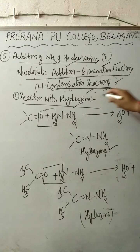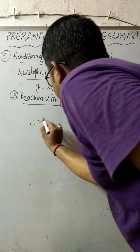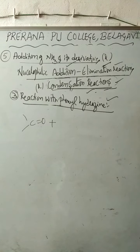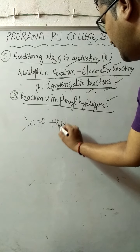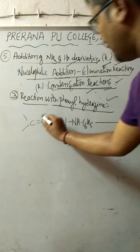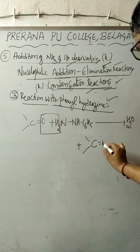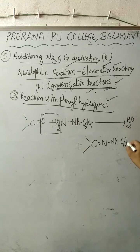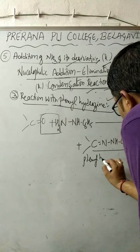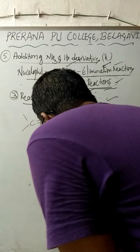Next, let us discuss the reaction with phenylhydrazine. Either an aldehyde or a ketone can be used. Phenylhydrazine is represented as NH2-NH-C6H5. When phenylhydrazine is involved in a chemical reaction, a water molecule gets eliminated and the product formed is called a phenylhydrazone.